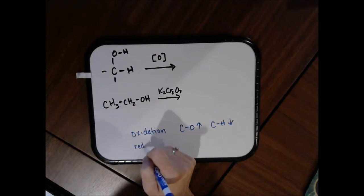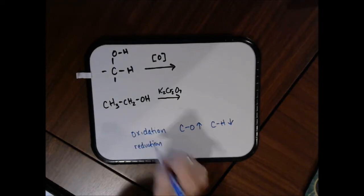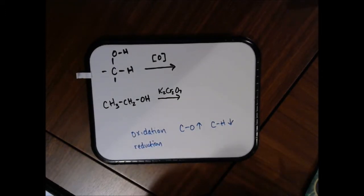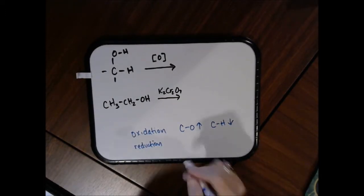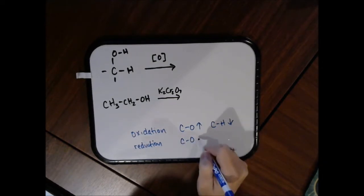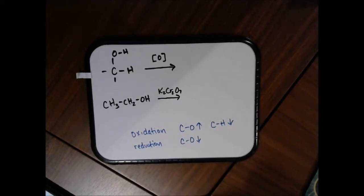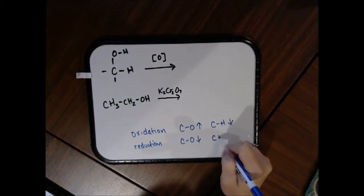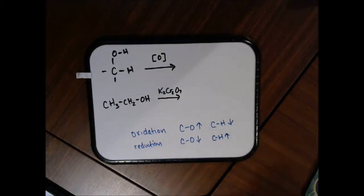Reduction is always the opposite of oxidation. In a reduction reaction, the carbon-oxygen bonds would go down — you would get rid of carbon-oxygen bonds — or the carbon-hydrogen bonds would go up. If either or both of those are occurring, you have a reduction reaction.